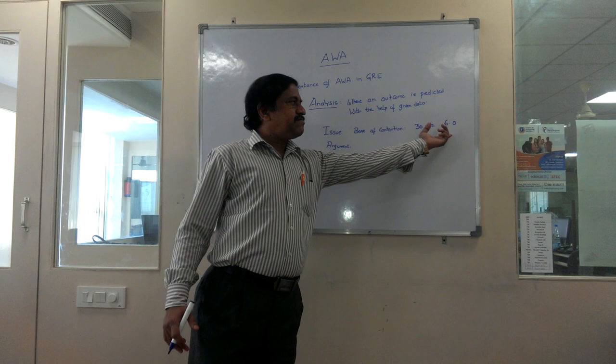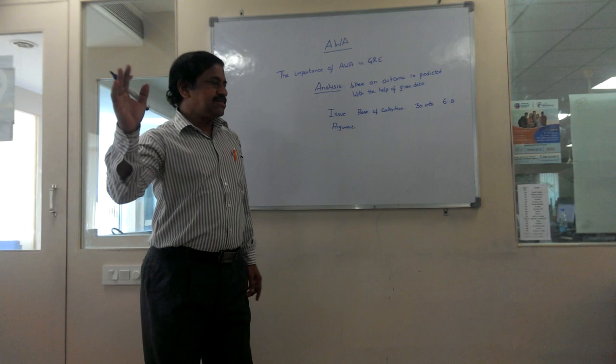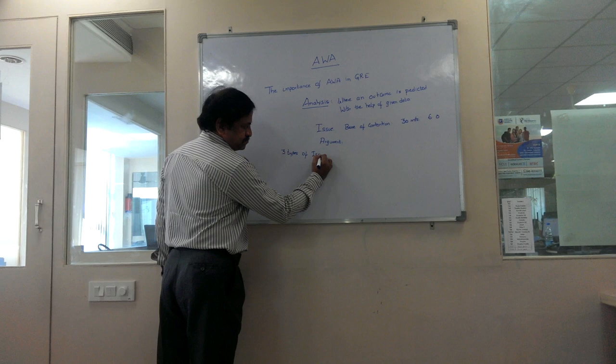The issue task is evaluated on a scale of 6.0, and there are various parameters considered for that evaluation. The time limit is 30 minutes. When we talk about issue topics in the GRE, there are three types of issue topics being considered.